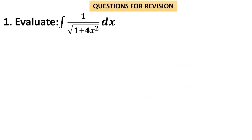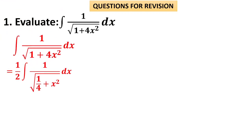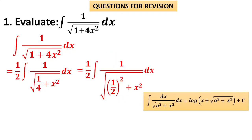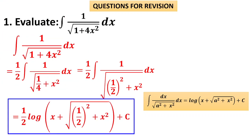Let us try with the problem ∫1 / √(1+4x²) dx. Step 1: take 4 outside — it will come out as 2, giving (1/2) · ∫dx / √(1/4 + x²). There is no strict need to identify a, but a = 1/2 here. The denominator is of the form √(a²+x²), so the formula is log(x + √(that expression)). Therefore the answer is (1/2) · log(x + √(1/4 + x²)) + c.